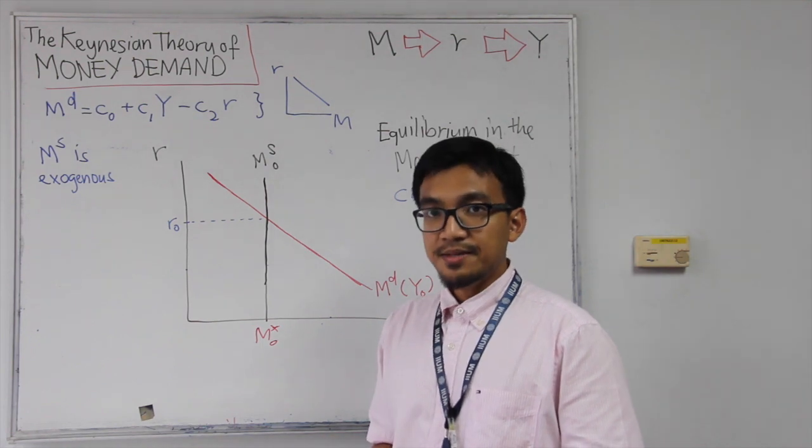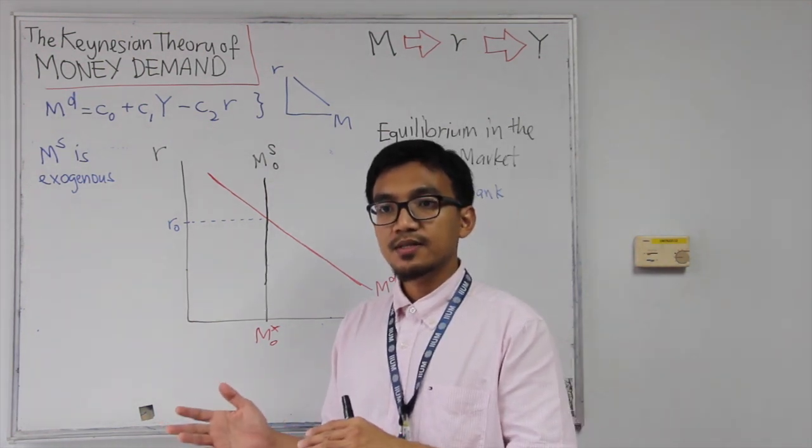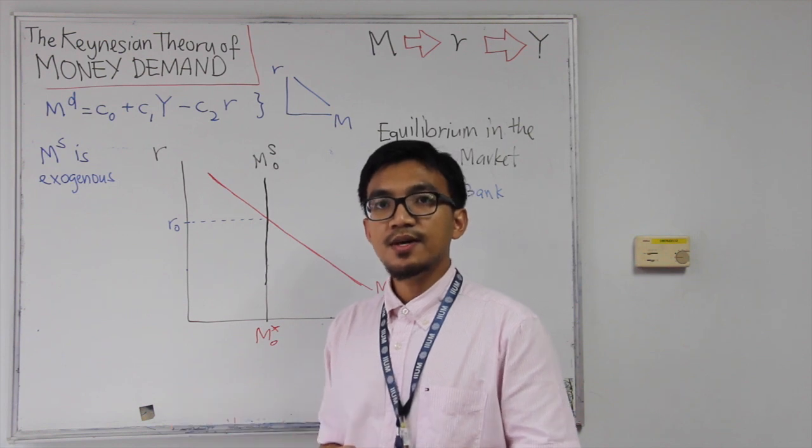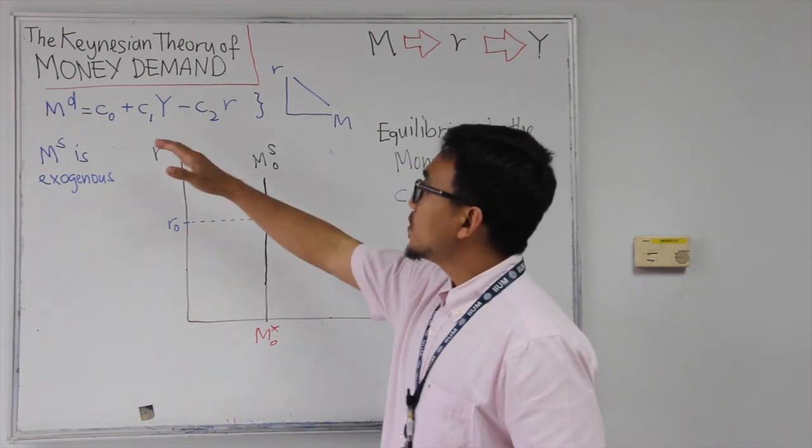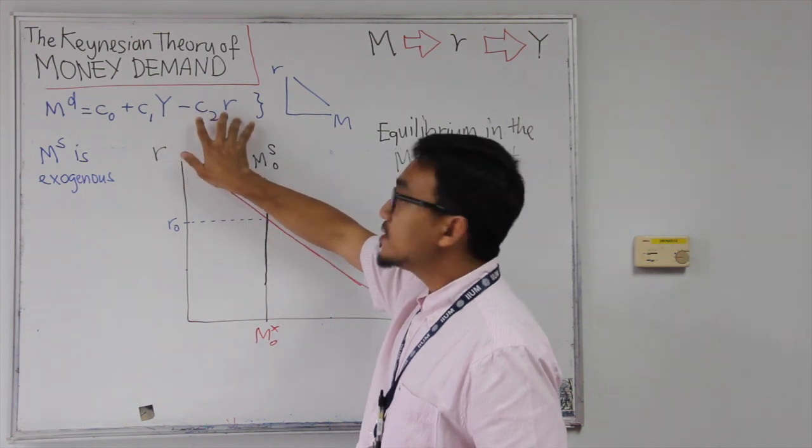Now we want to look at the money market. Since we have discussed the relationship between interest rate and total demand for money, we know that the total demand for money is a function of two variables, income and interest rate.